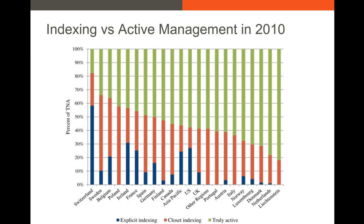You can get a sense that in some places, indexing is very common. I have this data as of 2010, but if I were to show this in 2022, 2023, or 2024, the green portion — truly active management — would absolutely shrink, and the blue and red portions would absolutely increase.